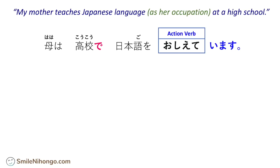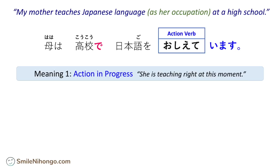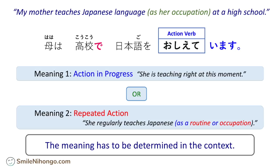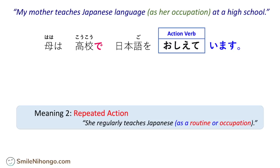A sentence like this can have two possible meanings. Meaning number one is an ongoing action — action in progress, as we have learned — so this can mean she's teaching right at this moment. Or this can also indicate a repeated action, something that she does over and over again, either as a routine or as a job. The specific meaning is something you have to determine from context. By looking at one single sentence without any context, you can't really tell if it's an ongoing or repeated action. But in today's lesson, I'm going to use a sentence like this for a repeated action — something she does over and over again, either as a routine or occupation.